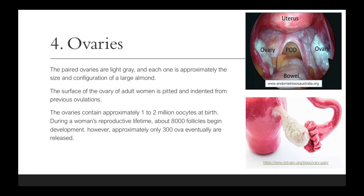The fourth structure is the ovary. The paired ovaries are light gray, and each one is approximately the size and configuration of a large almond. The surface of the ovary is pitted and indented from previous ovulations. The ovaries contain approximately 1 to 2 million oocytes at birth. During a woman's reproductive lifetime, about 8,000 follicles begin development; however, approximately only 300 ova are eventually released.